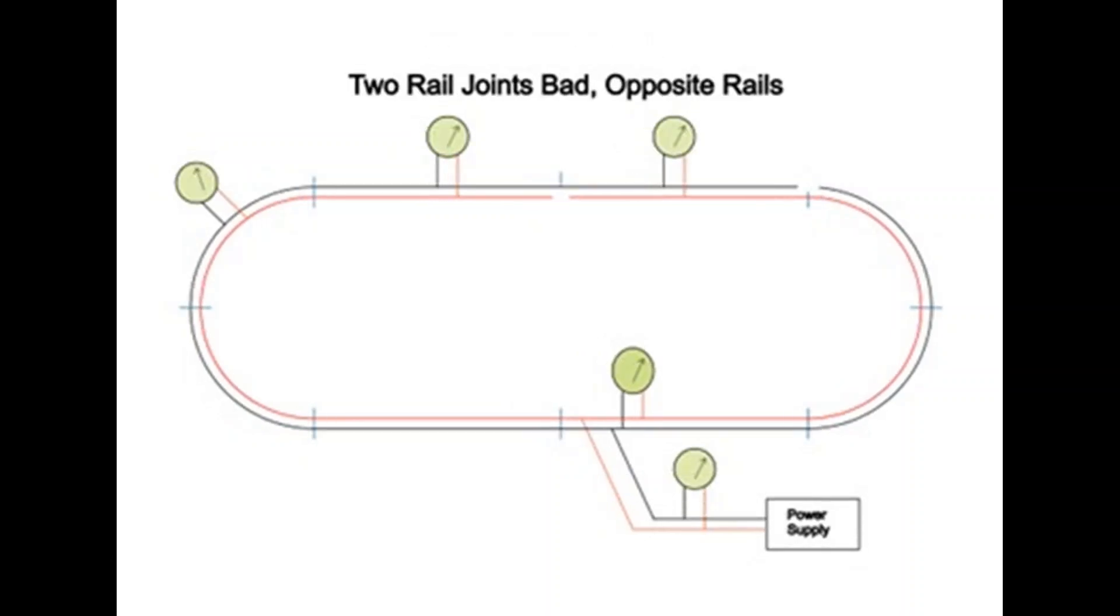But what happens when you have two bad rail joints? In this case, say they happen on opposite sides of the track on the different rails. If you look carefully at this diagram, you can see that all sections are still connected to both sides of the power supply. So as you can see, a train will still run around properly powered everywhere on this layout, wherever it is on the track.